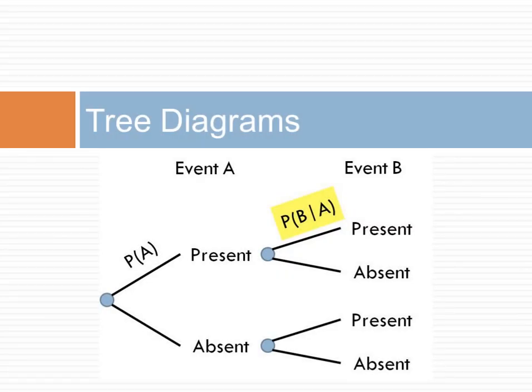Subsequent events are conditioned on the preceding events. Thus, the probability of the second event occurring is shown here as the conditional probability of the second event given the first event. This is the conditional probability of B given probability of A.